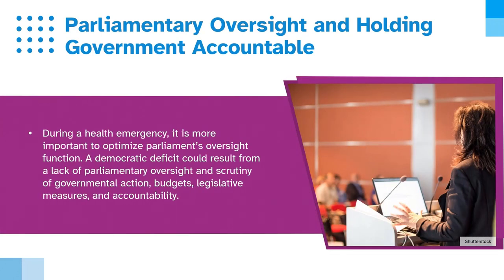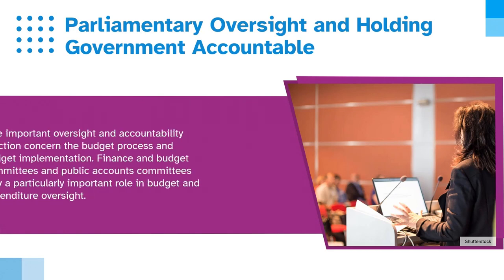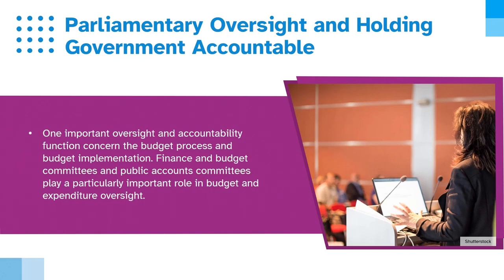During a health emergency, it is more important to optimise parliament's oversight function. A democratic deficit could result from a lack of parliamentary oversight and scrutiny of government action, budgets, legislative measures, and accountability. One important oversight and accountability function concerns the budget process and budget implementation. Finance and budget committees and public accounts committees play a particularly important role in budget and expenditure oversight.